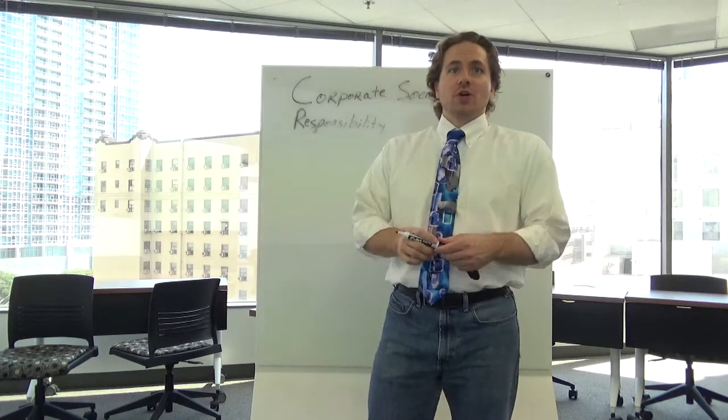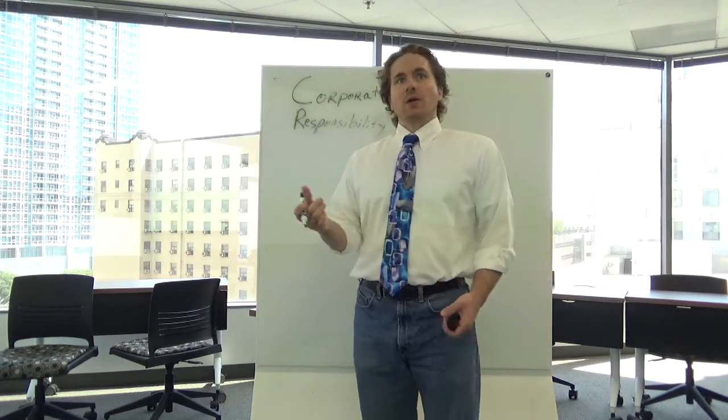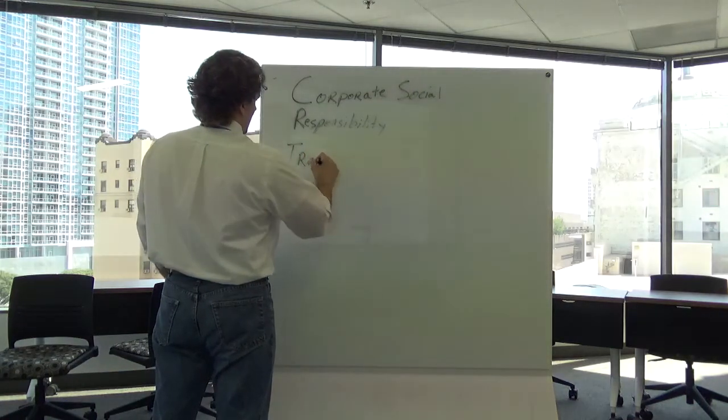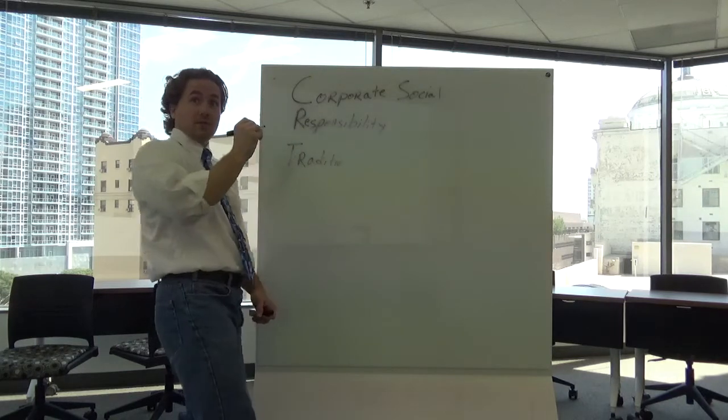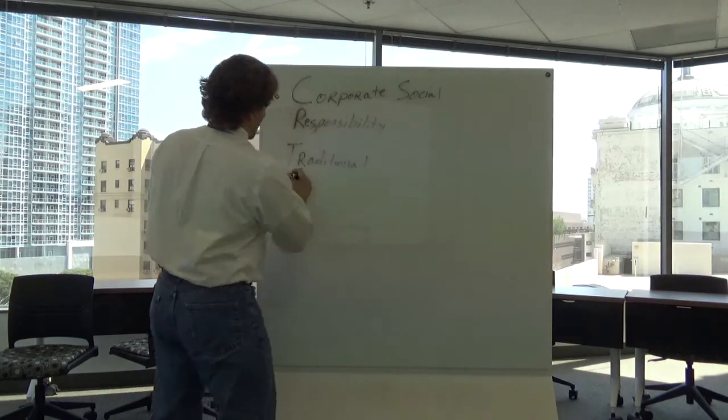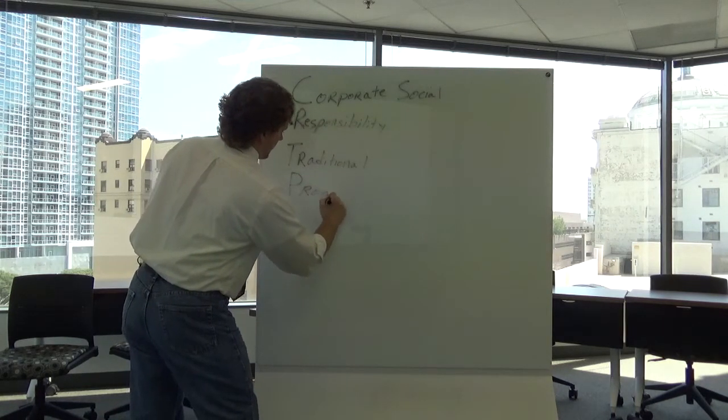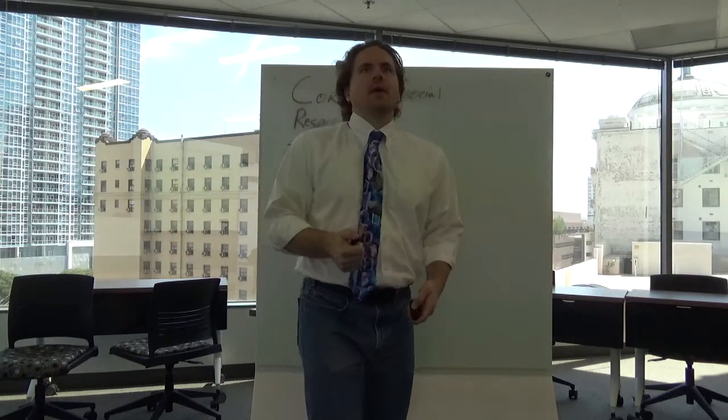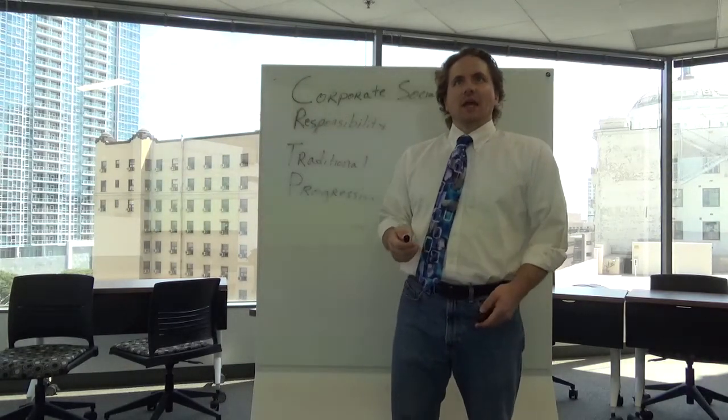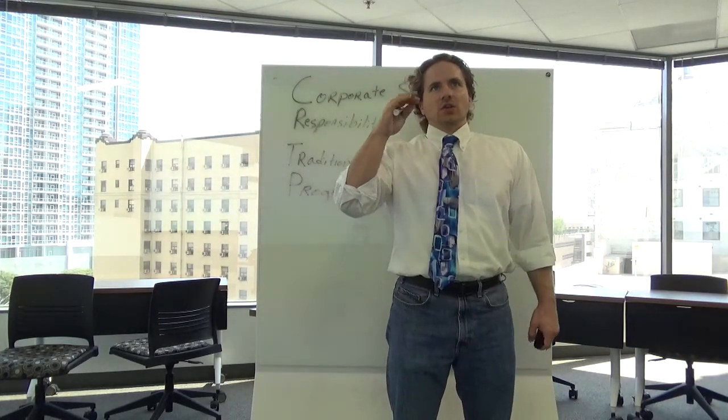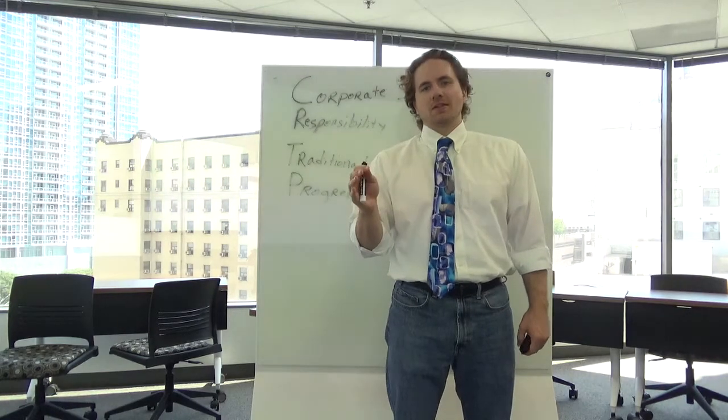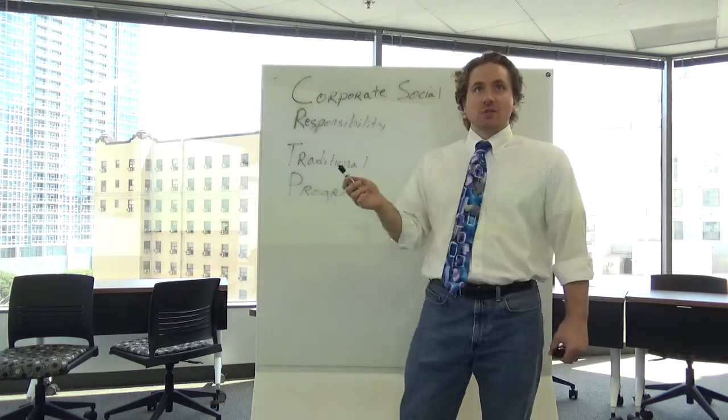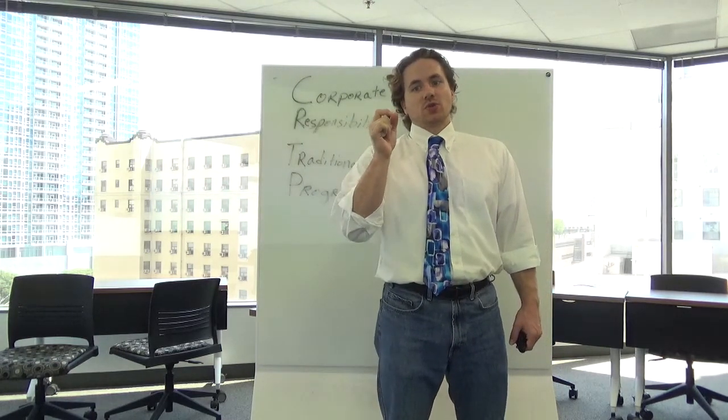Now there's kind of two different approaches to understanding CSR. We call them the progressive and the traditional model or avenue. So the traditional business avenue is basically that you will meet the socially responsible obligations by meeting market demands and complying with the law. Basically your overall goal of a corporation is just to make money and you do the absolute minimum of social responsibility activities.